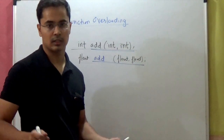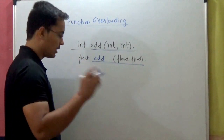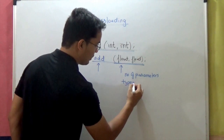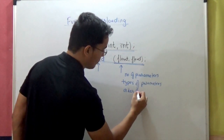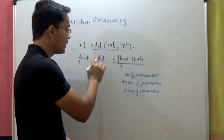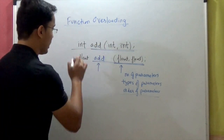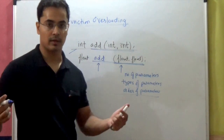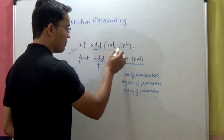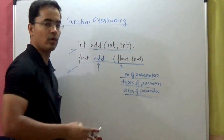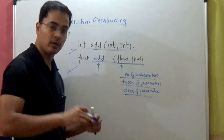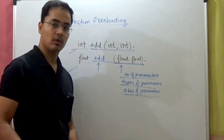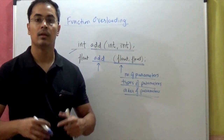What do you understand by function signature? Function signature includes the name of the function, number of parameters, types of parameters, and order of parameters. If you are using the same name for two functions, they can also have the same return type, but their function signature must differ. Since the name is the same, what should be different is either the number of parameters, types of parameters, or order of parameters — because something has to be different.